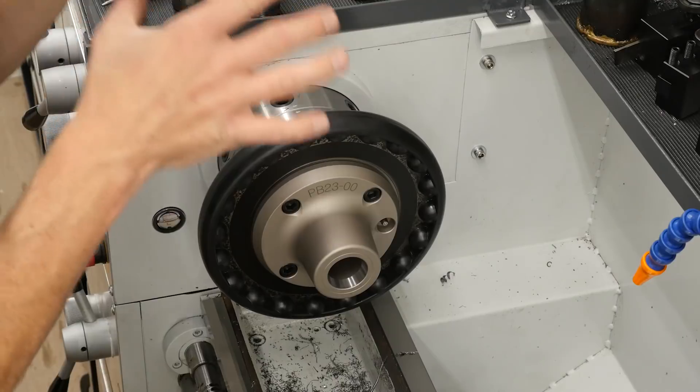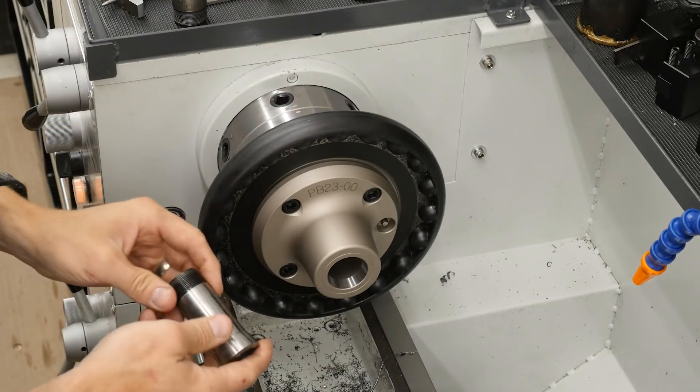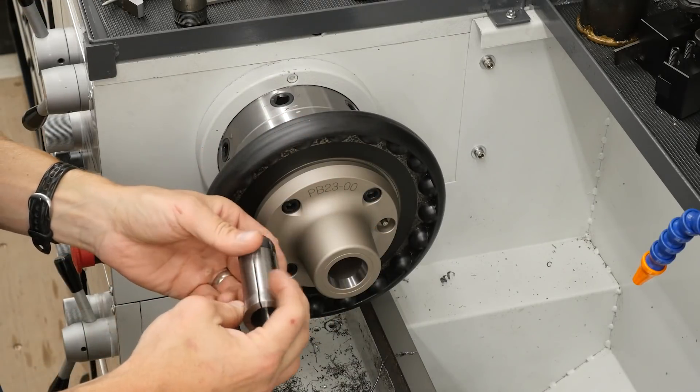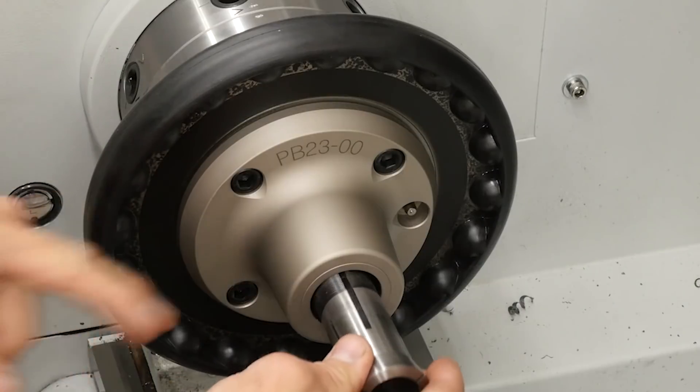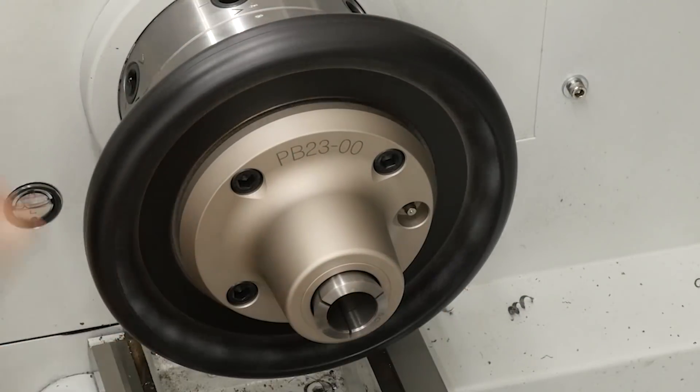So I've got the chuck mounted, mounts like any other chuck that I've got with the D1-5 mount. Let's go ahead and insert a collet. Now I've noted that with my PB23-00 upward my key is going to be kind of at the top.